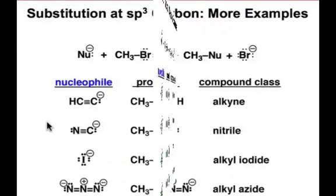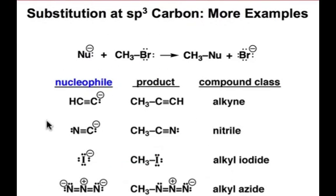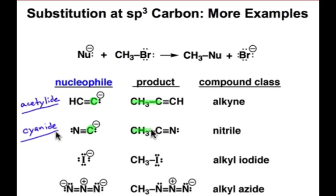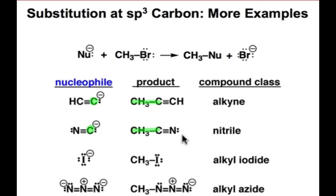In this last set of examples, we can see carbon-based nucleophiles, as in the case of this acetylide anion or this cyanide anion, to make new carbon-carbon bonds, yielding products that are the alkyne and nitrile shown here.